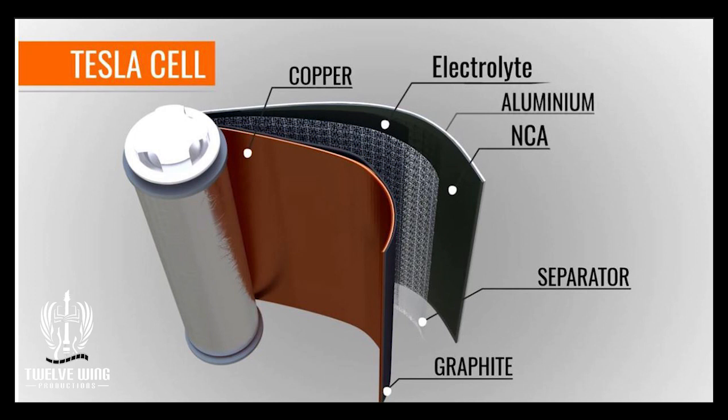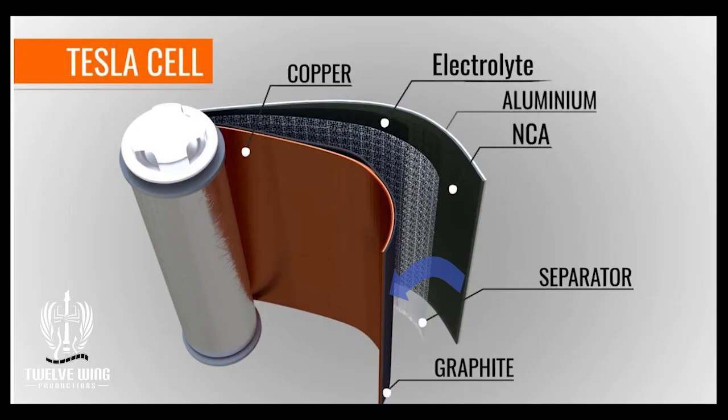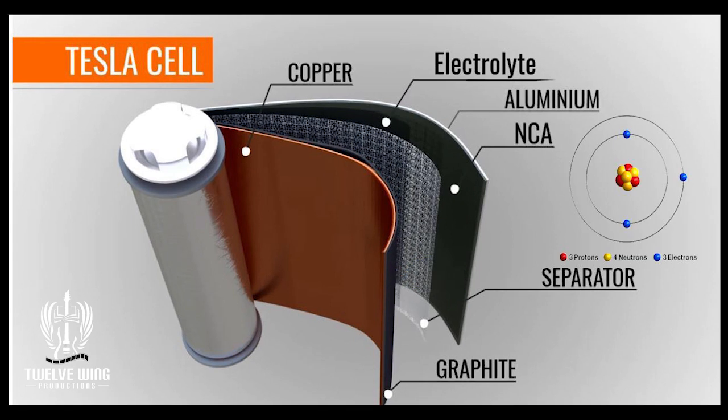The way this works, in real simple terms — we can do a future video that goes into greater detail if you want — is that the lithium ion travels from the NCA layer to the graphite. When the battery is at rest in its discharged state, the lithium is bound up in that oxide layer.